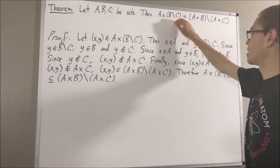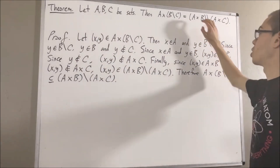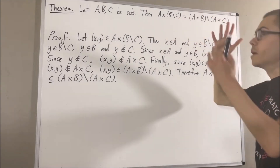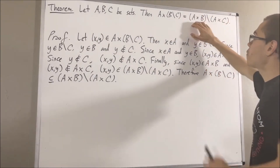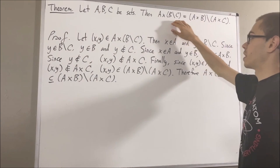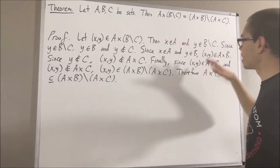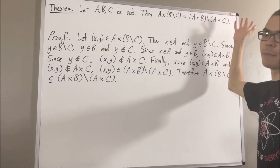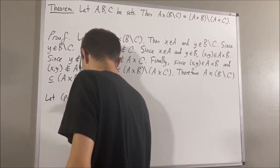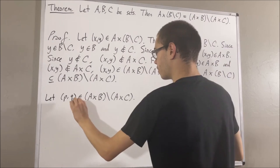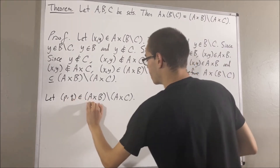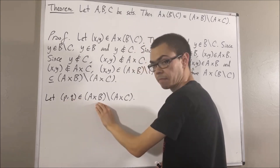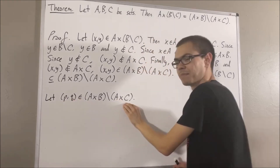Now that we've shown this set is a subset of this set, we're going to show that this set is a subset of this set — in other words, we're going to show that every element of this set belongs to this set. Give me an arbitrary element of this set; I'll call it P comma Q. What does it mean for P comma Q to be an element of this set? It means that P comma Q is an element of A times B, but not an element of A times C.